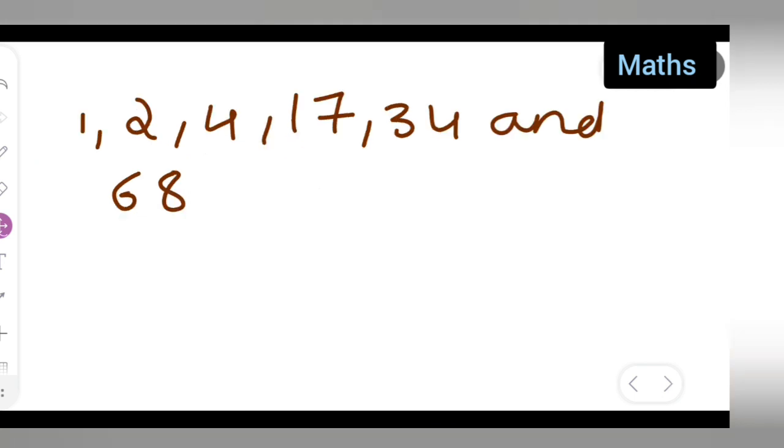1, 2, 4, 17, 34 and 68 are the factors of 68. So, I hope you have understood how to write all the factors of 68. So, these are all the factors of 68.